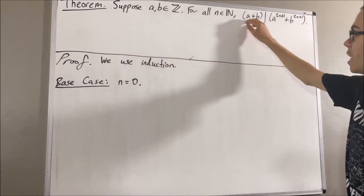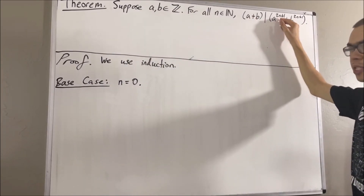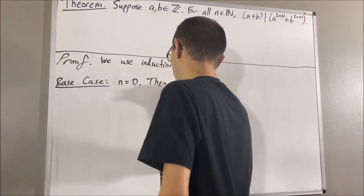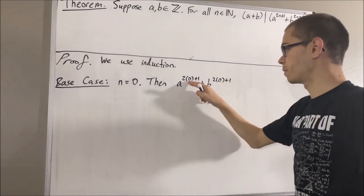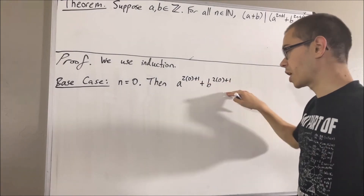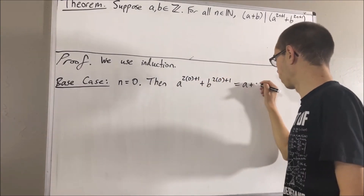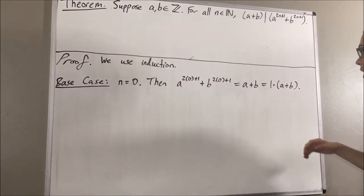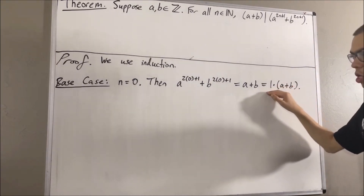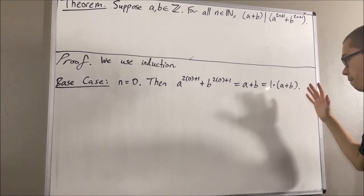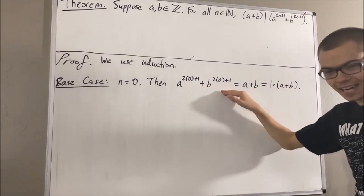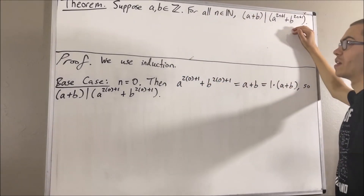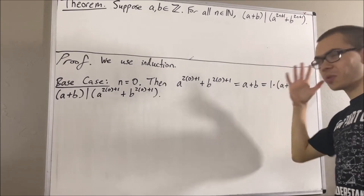We want to show that A plus B divides A to the 2n plus 1 plus B to the 2n plus 1. If we write out what that is, we know that 2n plus 1 equals 1, so this entire thing is just equal to A plus B. And A plus B equals 1 times A plus B, so A plus B divides this. We have shown this is true when n equals 0, completing the base case.